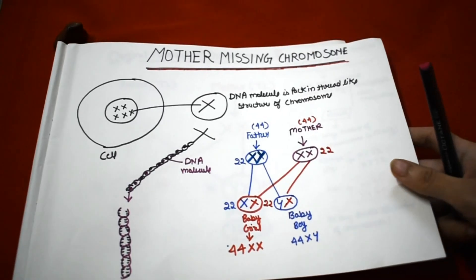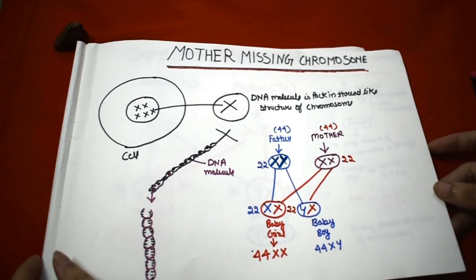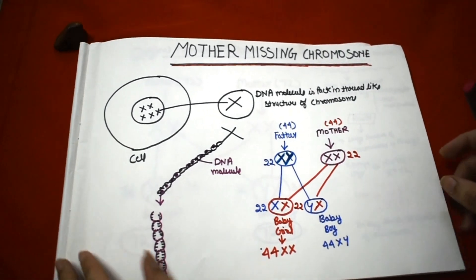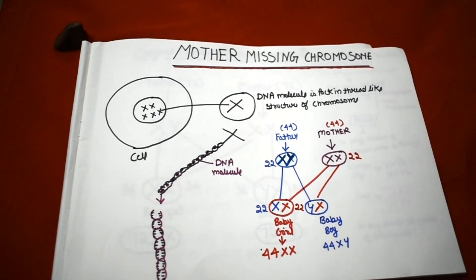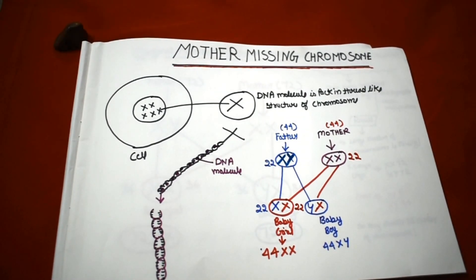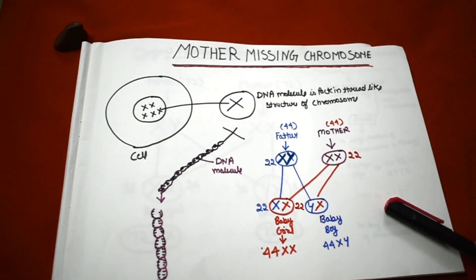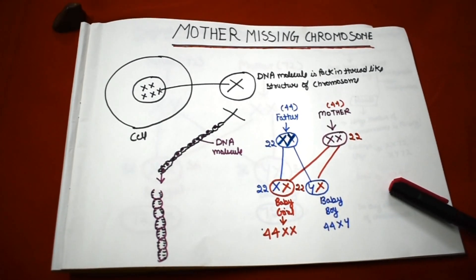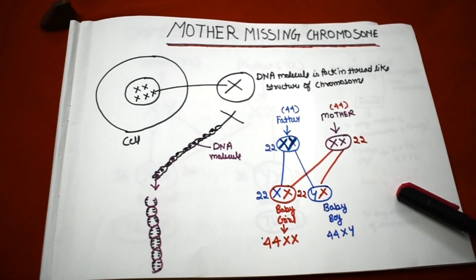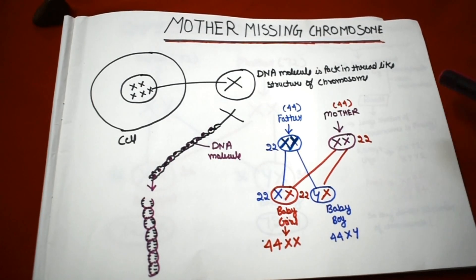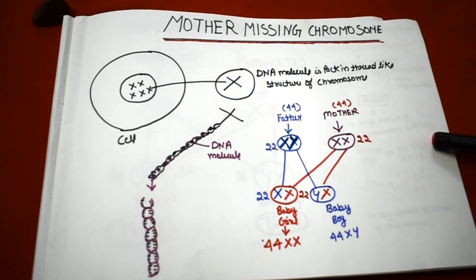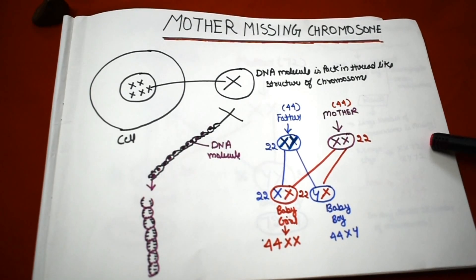The answer is the mother missing chromosome. So what is the mother missing chromosome? We have a cell, and inside a cell we have a nucleus, and in a nucleus we have chromosomes. In this chromosome, the DNA molecules are packed in a thread-like structure. We already know about cell cytology — we studied this in school in 10th, 11th, and 12th class.